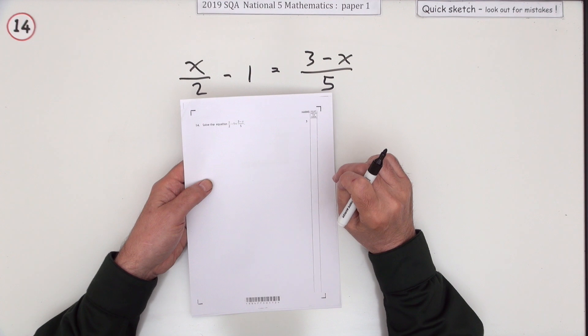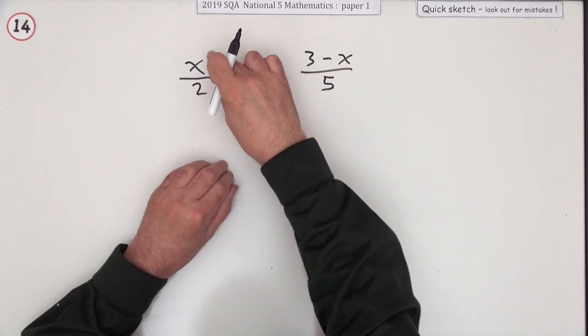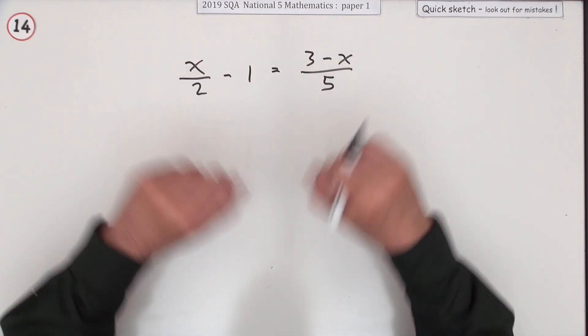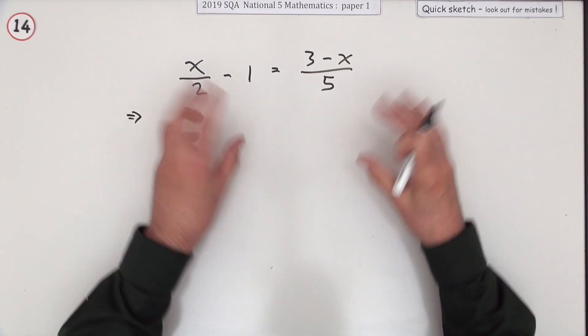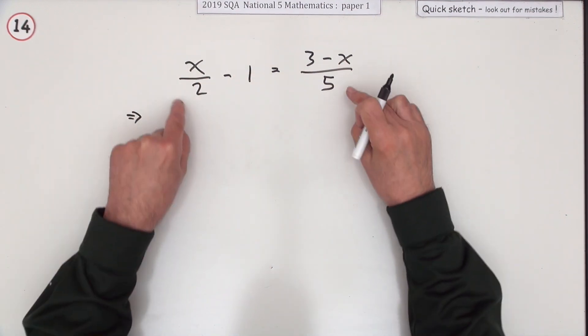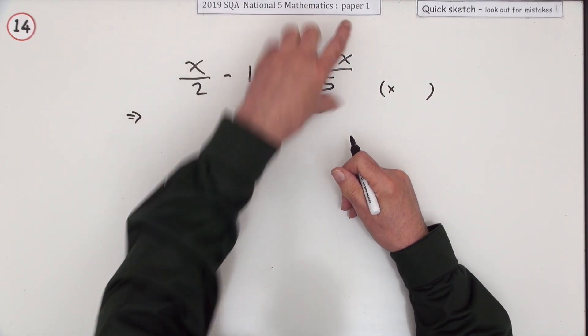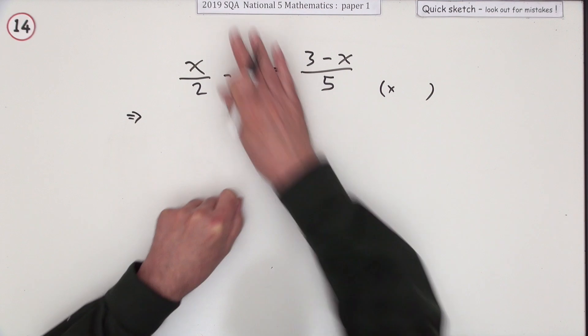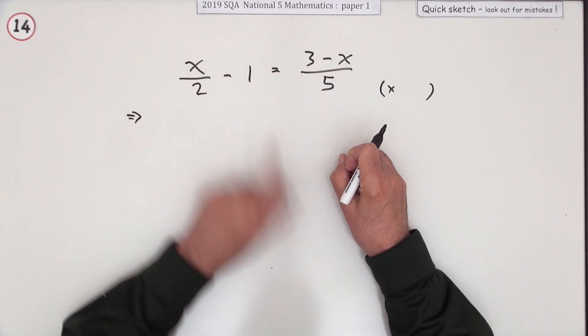Number 14 then. What we've got here is an equation, a little equation. It's just a linear equation, there are no squares in it, but it's got fractions in it. So you don't want those fractions, you don't want to be carrying fractions about - get rid of them. Find something that you can multiply every term by that will absorb those denominators.